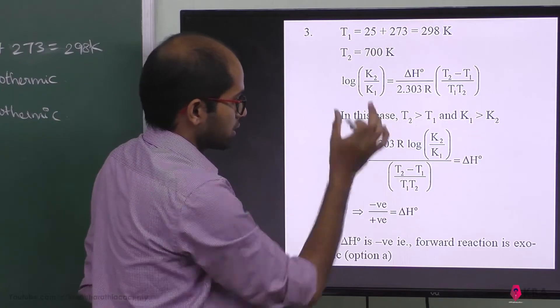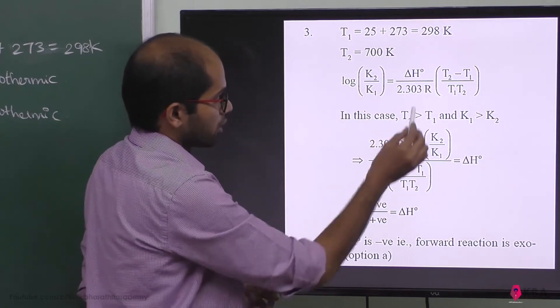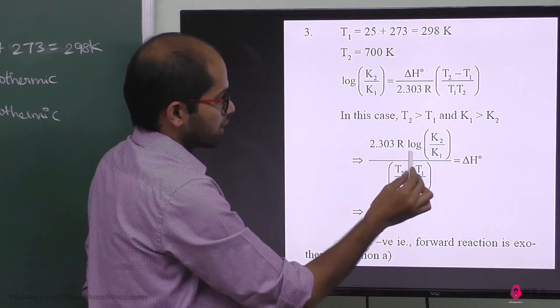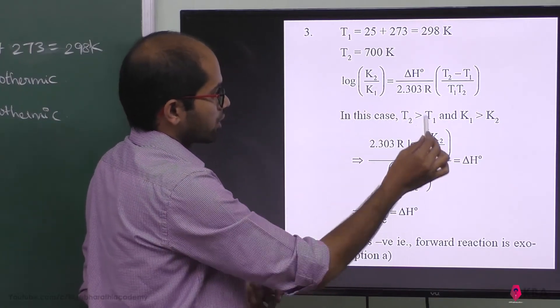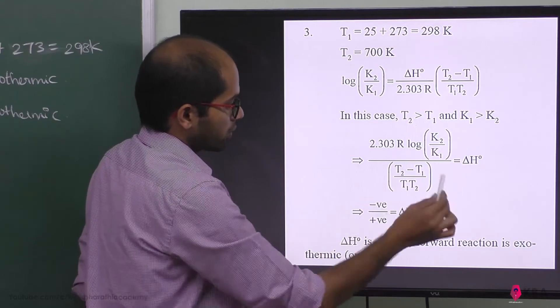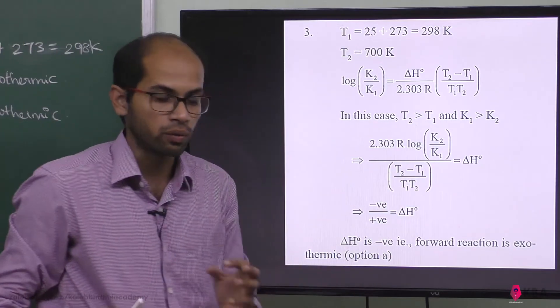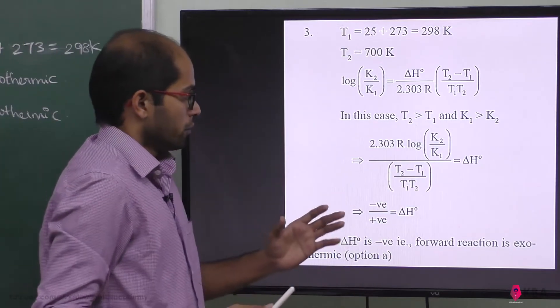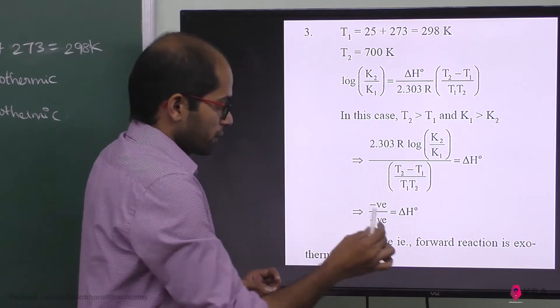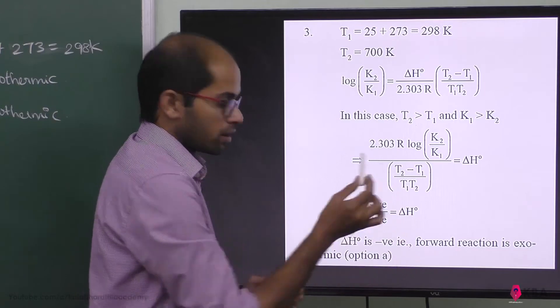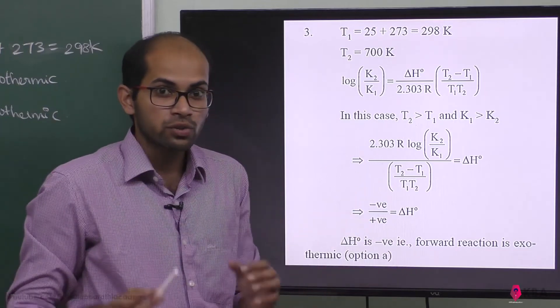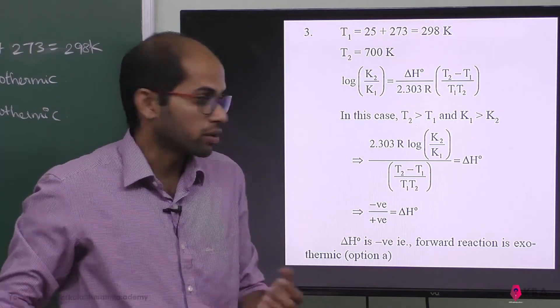Using the Van't Hoff equation: 2.303R times log(K2/K1) equals delta H times (T2 minus T1) divided by (T1 times T2). We rearrange to find delta H, and determine whether it is negative or positive.